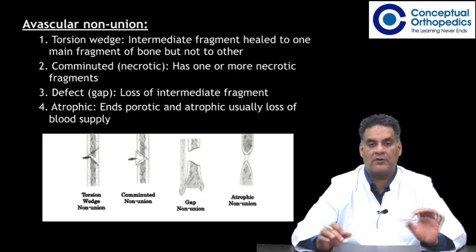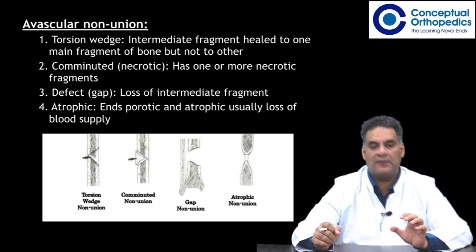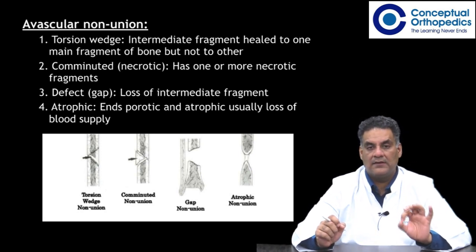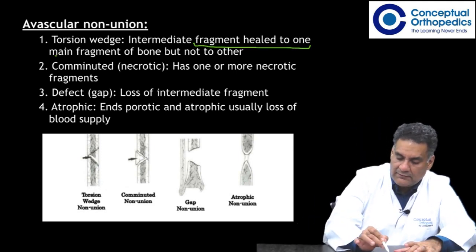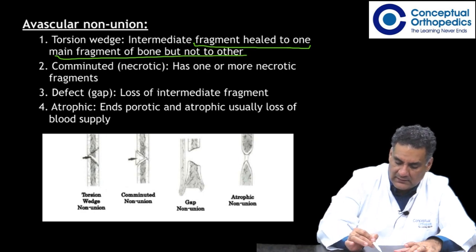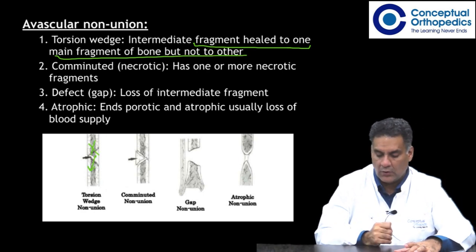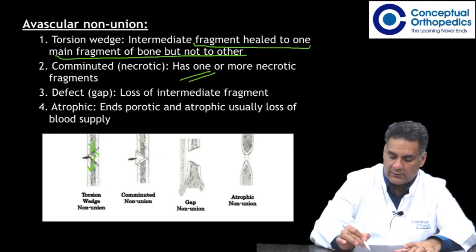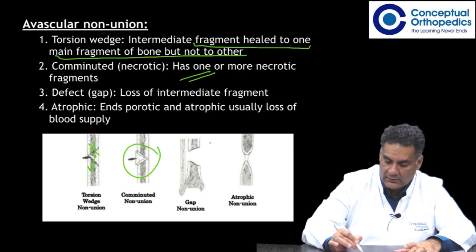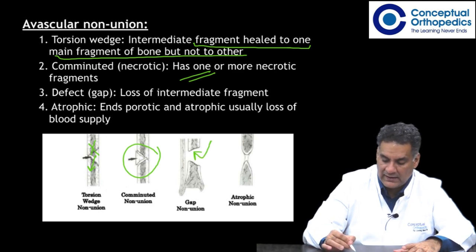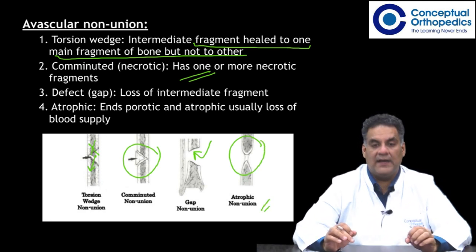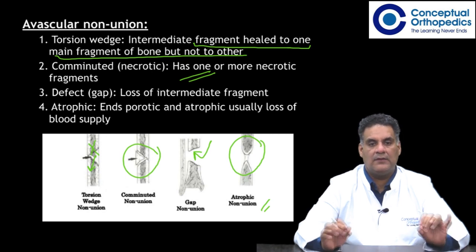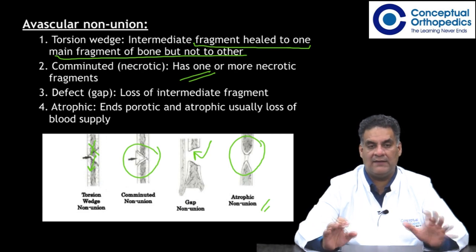In atrophic nonunion you have a torsion wedge, where an intermediate fragment heals to one main fragment but not the other. You can also have a comminuted necrotic fragment in between which does not unite, or a gap nonunion, or osteoporotic and atrophic bone ends due to loss of blood supply. So atrophic nonunion types include: gap nonunion, atrophic with osteoporotic bone ends, comminuted necrotic fragment, or torsion wedge — all are avascular.